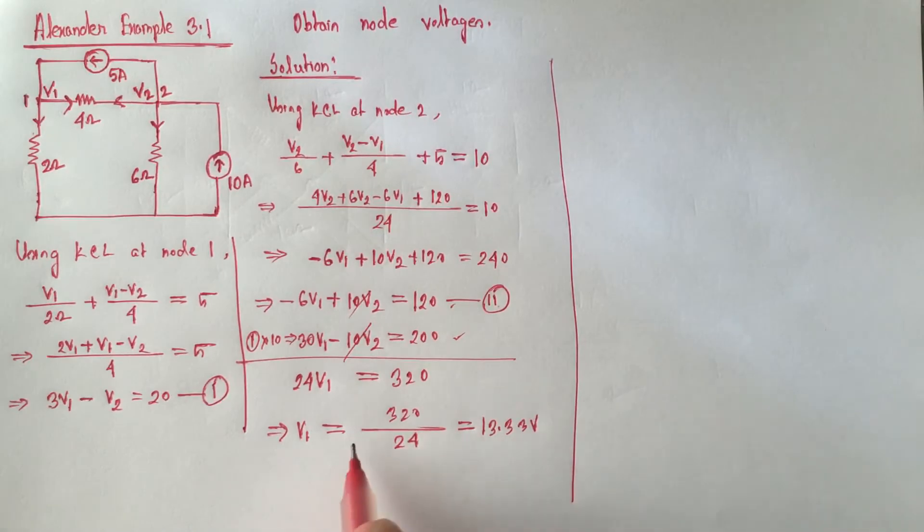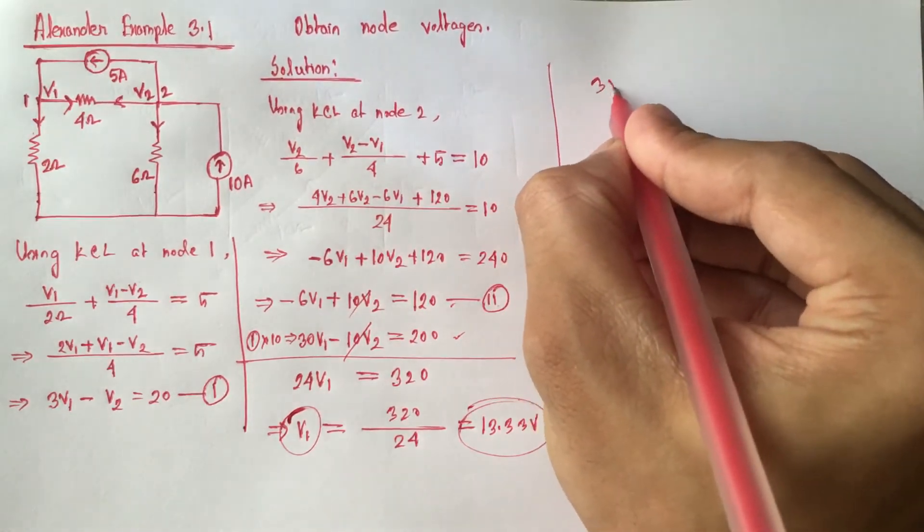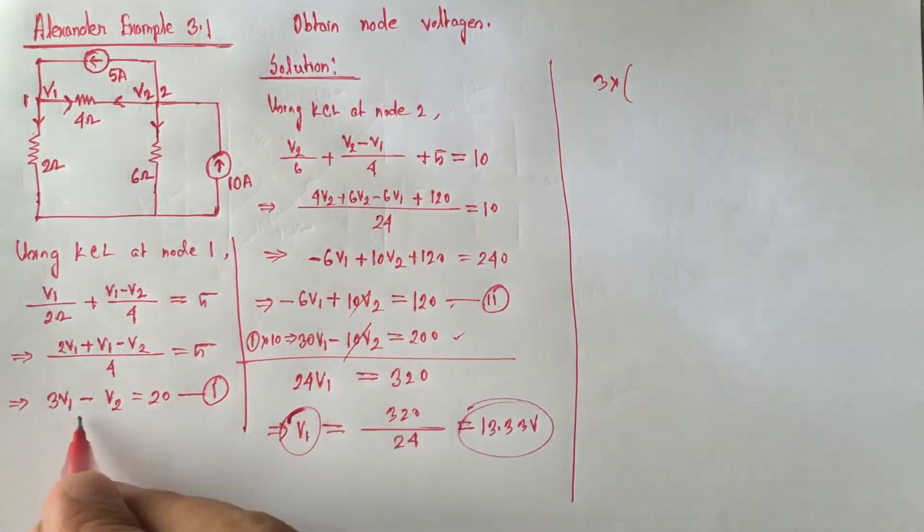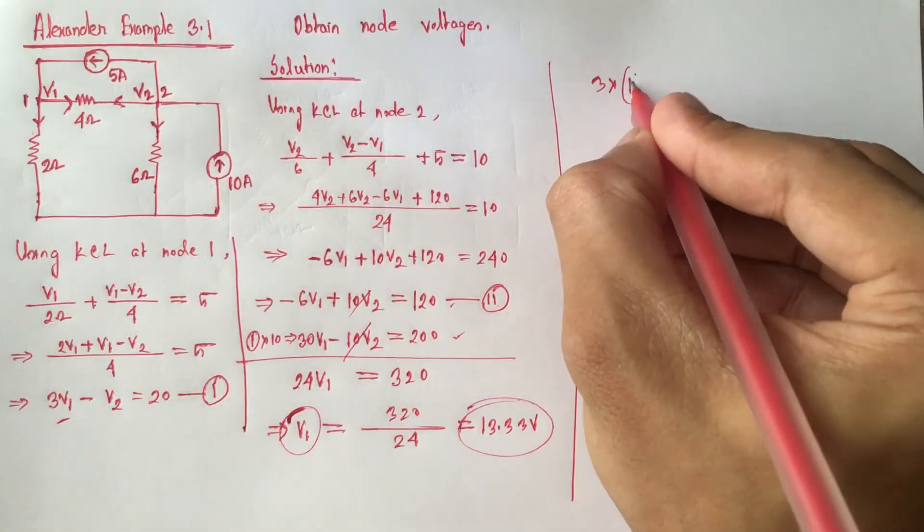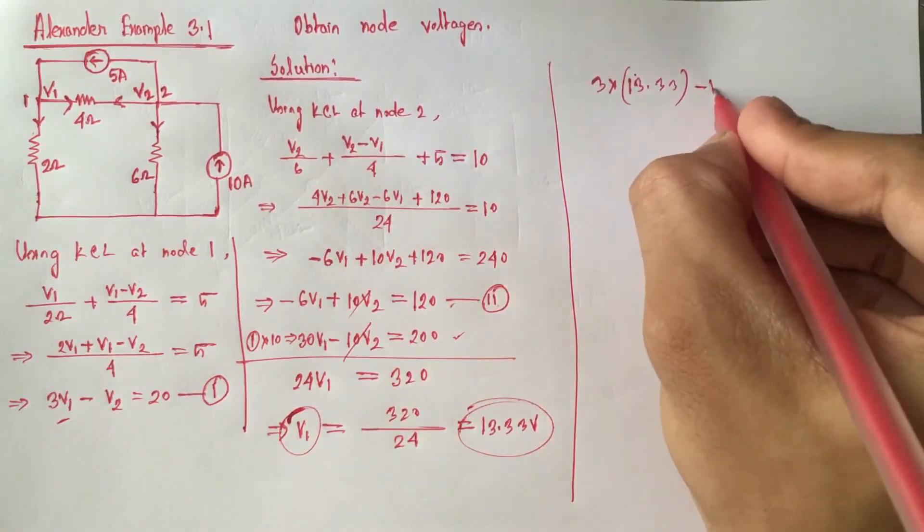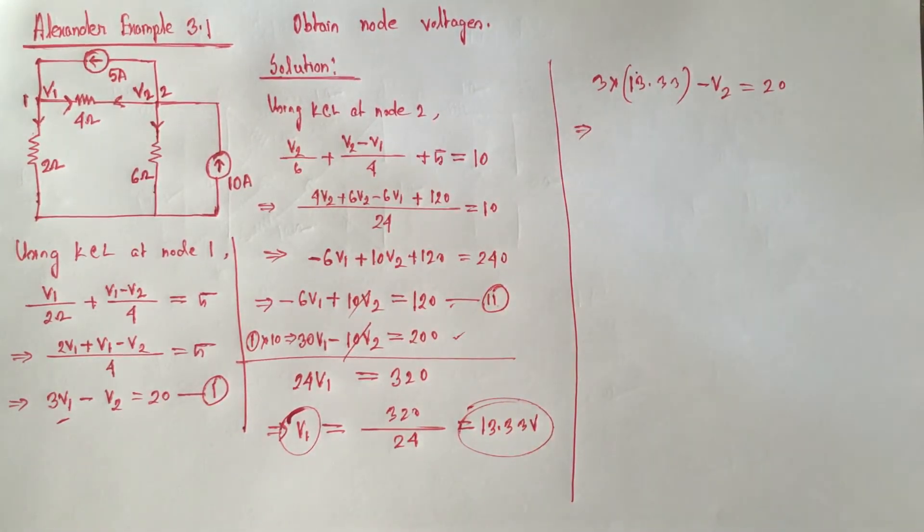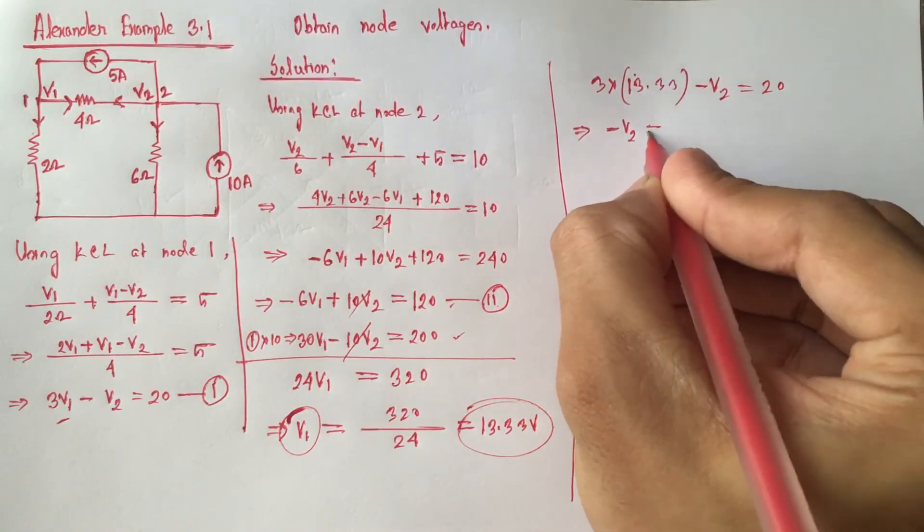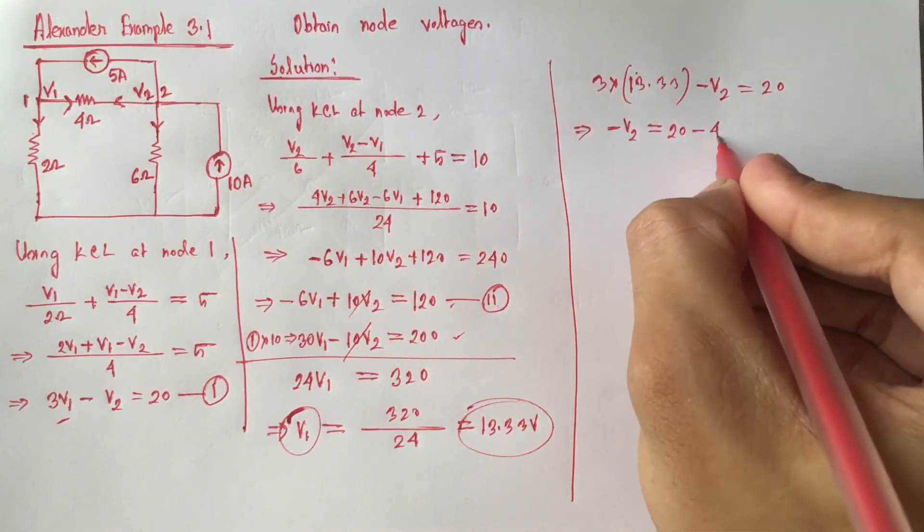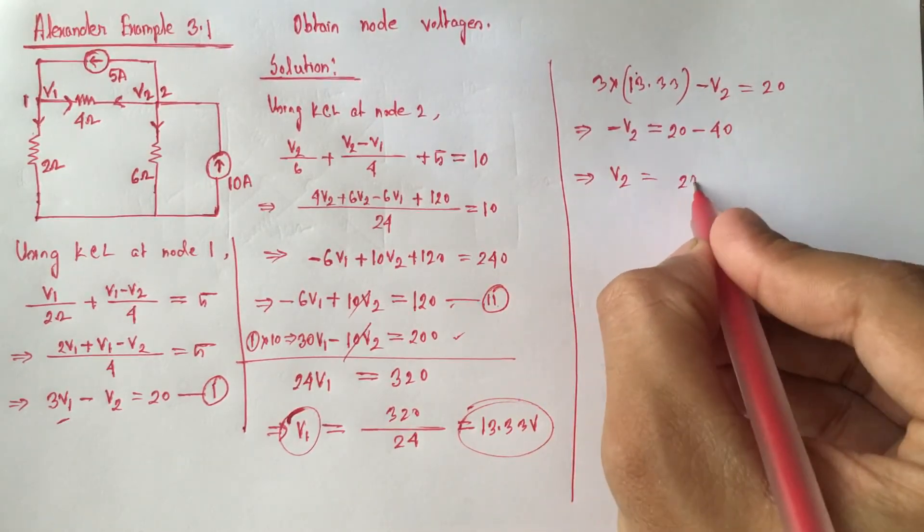Now if we use the value of V1 which is 13.33 volt in equation 1, we will get 3 multiplied by 13.33 minus V2 is equal to 20, that is 40 minus V2 is equal to 20, that is V2 is equal to 20 volt.